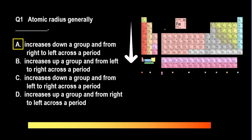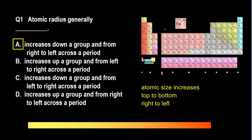The first periodic trend pertains to the atomic radius, or the size of the atom. As we go down a column or group in the periodic table, the atomic size increases. As we move from right to left within a row or period, we are moving within a shell, and each element to the left has one less proton in the nucleus, so there is less electromagnetic attraction felt by the electrons, and the radius thus increases.